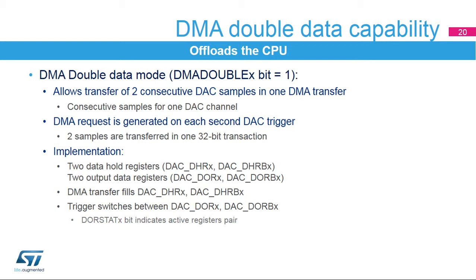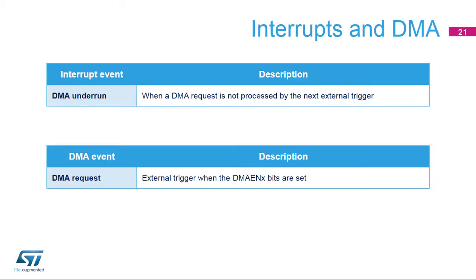In DMA double mode, DMA requests can only handle one DAC channel. To use two channel outputs in DMA double mode, each DMA channel must be configured separately. To transfer data from memory, a DMA request can be generated. The DAC DMA request is not queued, so if a second external trigger arrives before acknowledgement of the first is received, no new request is issued and an under-run flag is set, causing a maskable interrupt request.